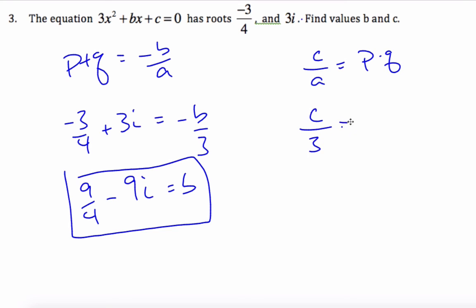Times 3i, which gives me c is equal to negative 27i over 4.